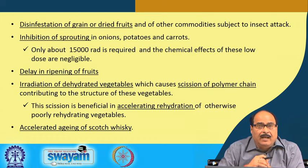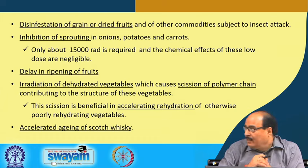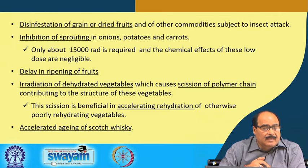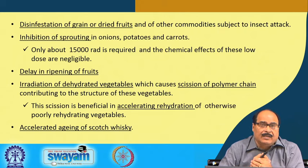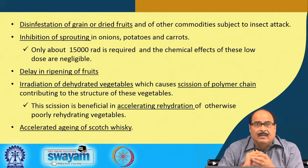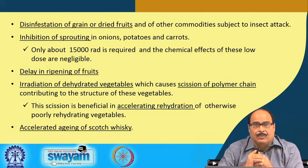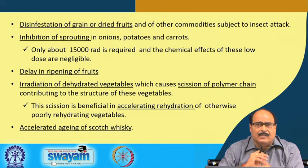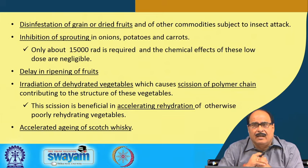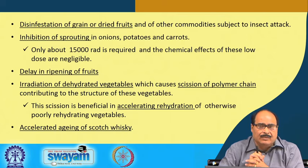Another very good application area is disinfestation of food grains or dried fruits. Insect infestation is one of the major causes of spoilage of grains and dried fruits. Insects are comparatively much more sensitive to ionizing radiation — just a few hundred to a few thousand rads of ionizing radiation can kill these insects — making this a very interesting application.